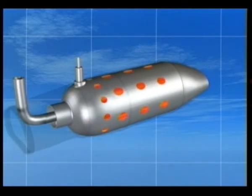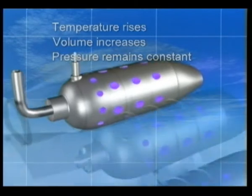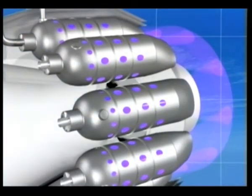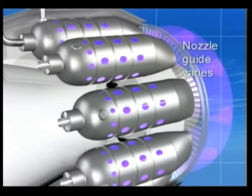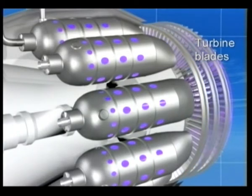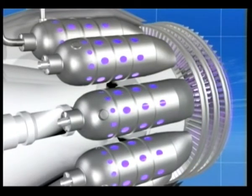Within the combustion chamber, owing to the added heat energy of the fuel, the gas both rises in temperature and increases in volume. After passing through the combustion chambers, the hot gases enter the nozzle guide vanes, which direct them at increased velocity onto the turbine blades, causing the turbine disc to rotate, which in turn drives the compressor.